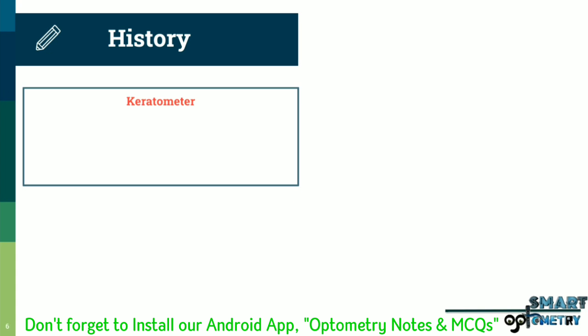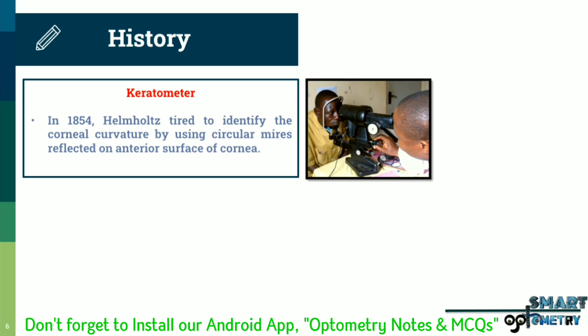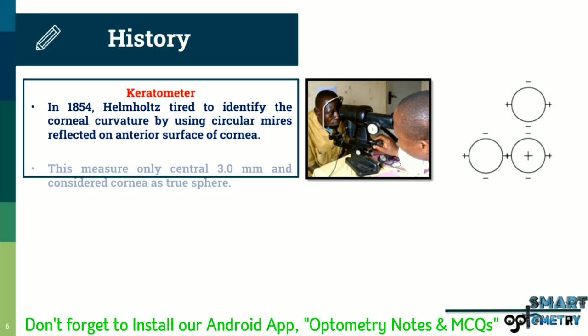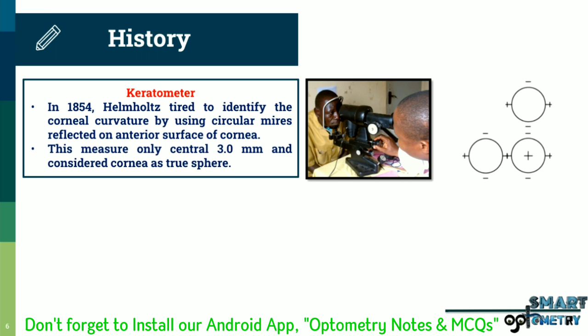In 1854, Helmholtz developed the keratometer, trying to identify corneal curvature using circular mires reflected on the anterior surface of the cornea. However, the limitation was that it measured only the central 3 mm and considered the cornea as a true sphere.